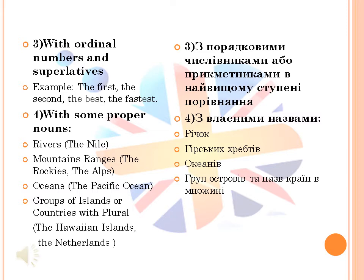Also, we use article the with some proper nouns. For example: rivers — the Nile; mountain ranges — the Rockies or the Alps; oceans — the Pacific Ocean; groups of islands or countries with plural names — for example, the Hawaiian Islands or the Netherlands.